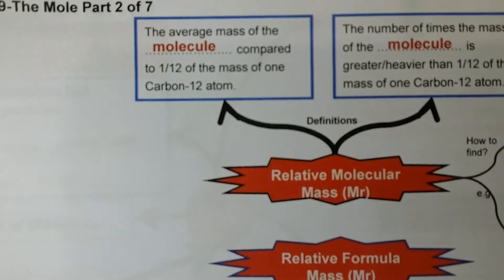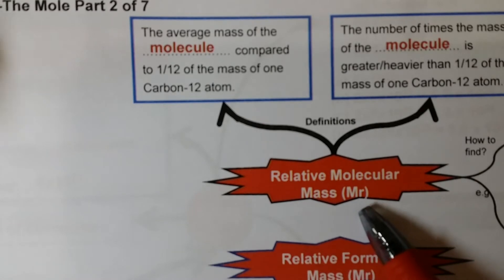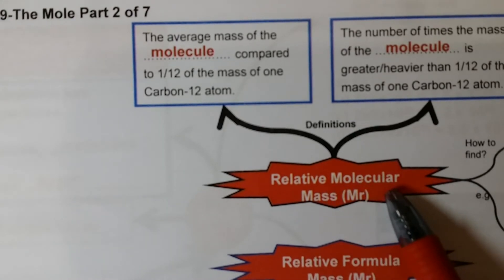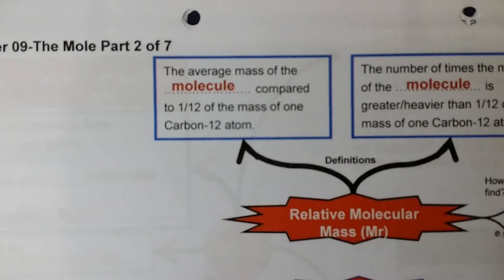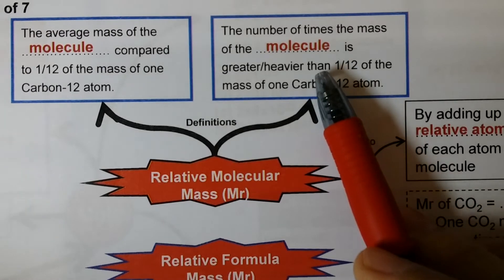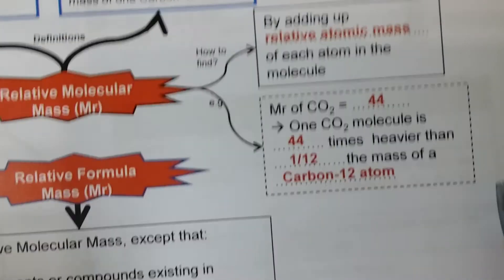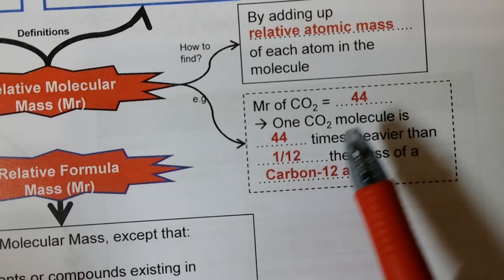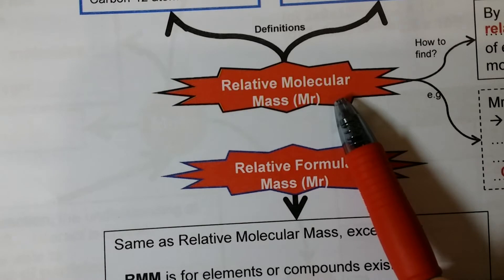The next part of the mind map is about relative molecular mass, or MR. Relative molecular mass is actually the same concept as relative atomic mass, except it is for molecules. The word 'molecule' means the substance is a covalent substance — non-metal combined with non-metal. How do you calculate the MR? By adding up the relative atomic mass of each atom. For example, the MR for carbon dioxide is 44, meaning one CO₂ molecule is 44 times heavier than 1/12 of the mass of a carbon-12 atom.